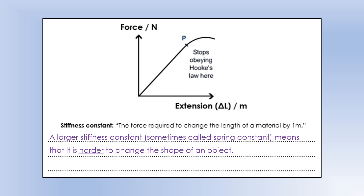A larger stiffness constant means it's harder to change the shape of an object - a steeper gradient on the graph means greater resistance to shape change, while a smaller gradient means the material is easier to deform. That concludes this video on mass, weight, forces, and Hooke's Law. The next video will be on the motion of objects: speed, acceleration, and resultant force.